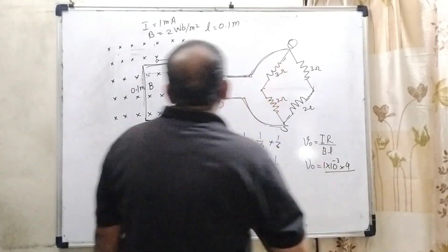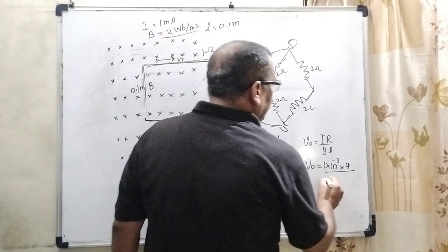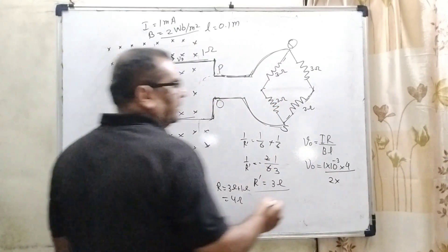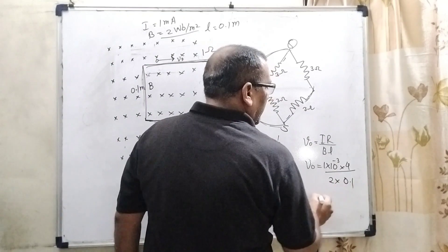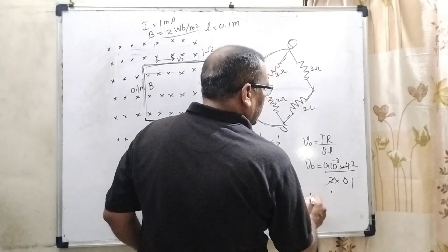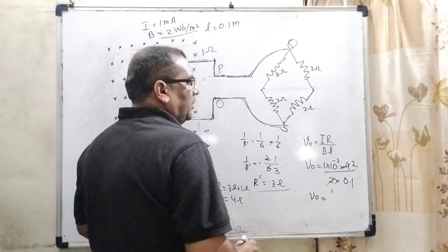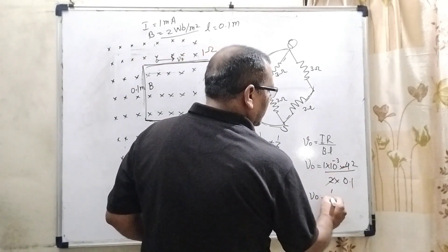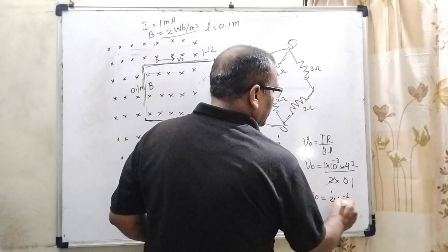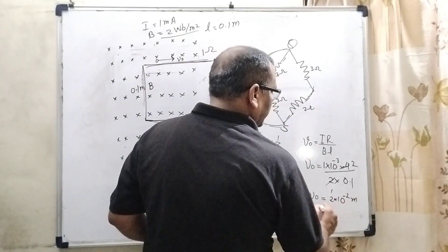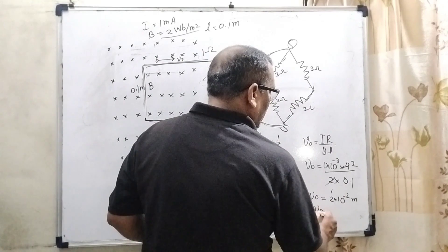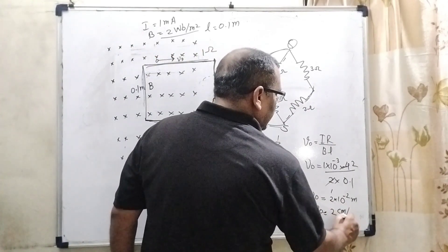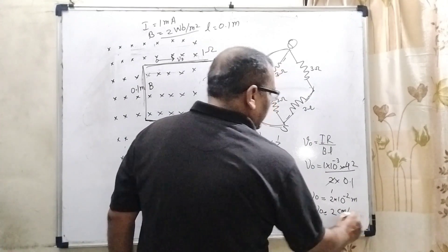The magnetic field is given as 2 Weber per meter square, and the length is given as 0.1 metre. So V₀ equals (1 × 10⁻³ × 4) / (2 × 0.1), which gives V₀ equal to 2 × 10⁻² metre per second. That can be written as 2 centimetre per second. That is the velocity.